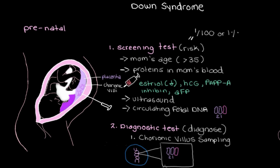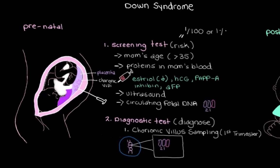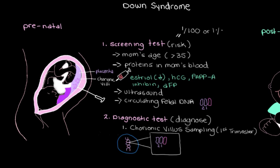If mom or the parents want a diagnostic test done in the first trimester, around weeks 11 to 12, we would generally do chorionic villus sampling. Sometimes the decision is made to have a diagnostic test done a little later during the pregnancy, such as during the second trimester, around 15 to 19 weeks. When further along, there is another prenatal diagnostic test available.